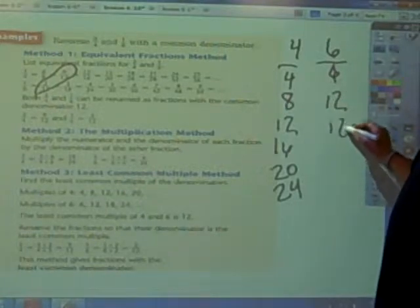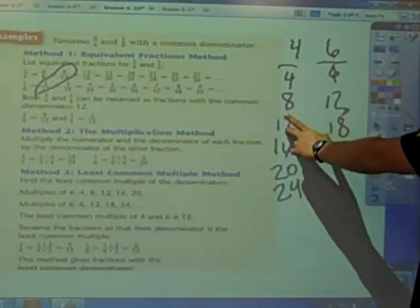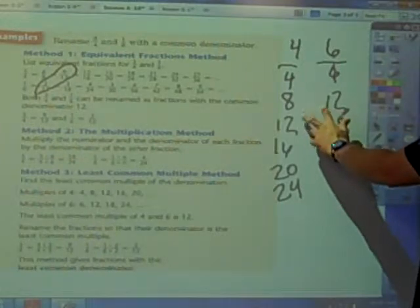6, 12, 18, and so forth. I know they both have 12 as a common denominator.